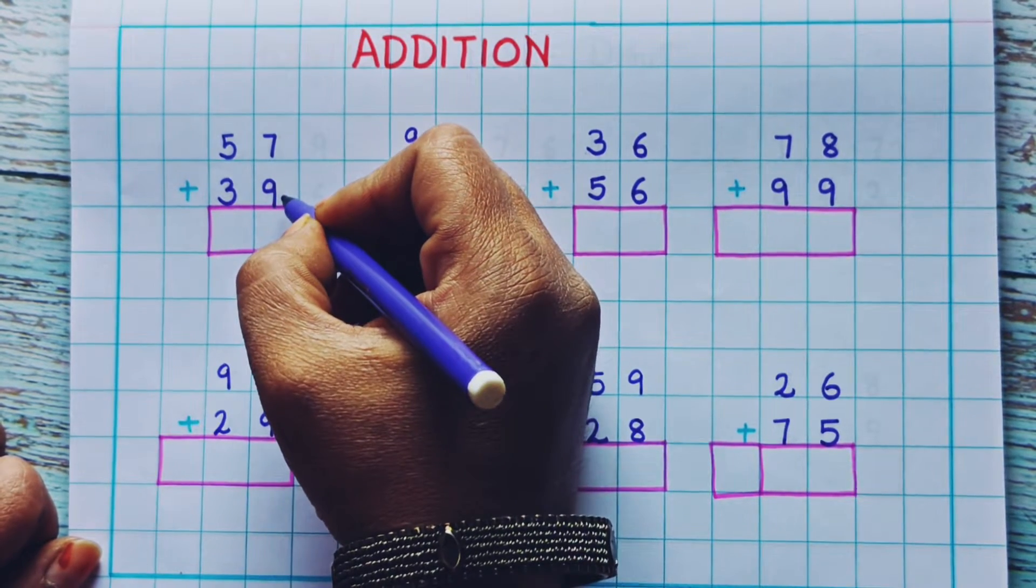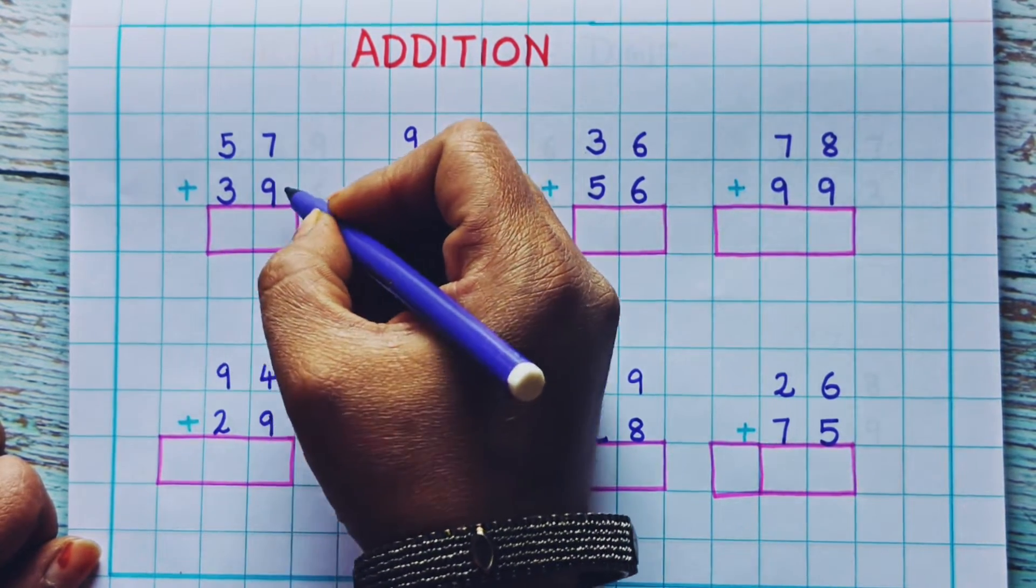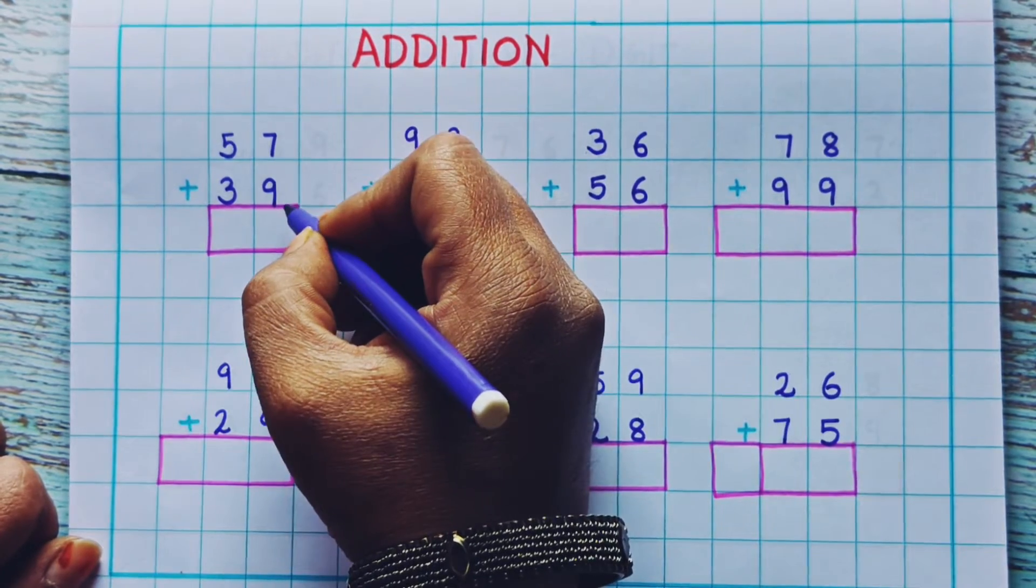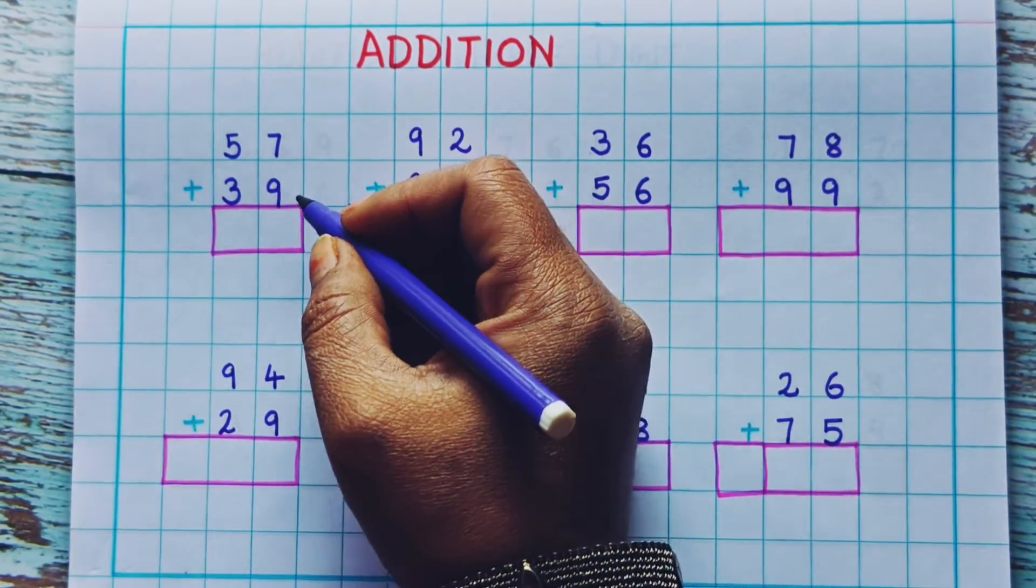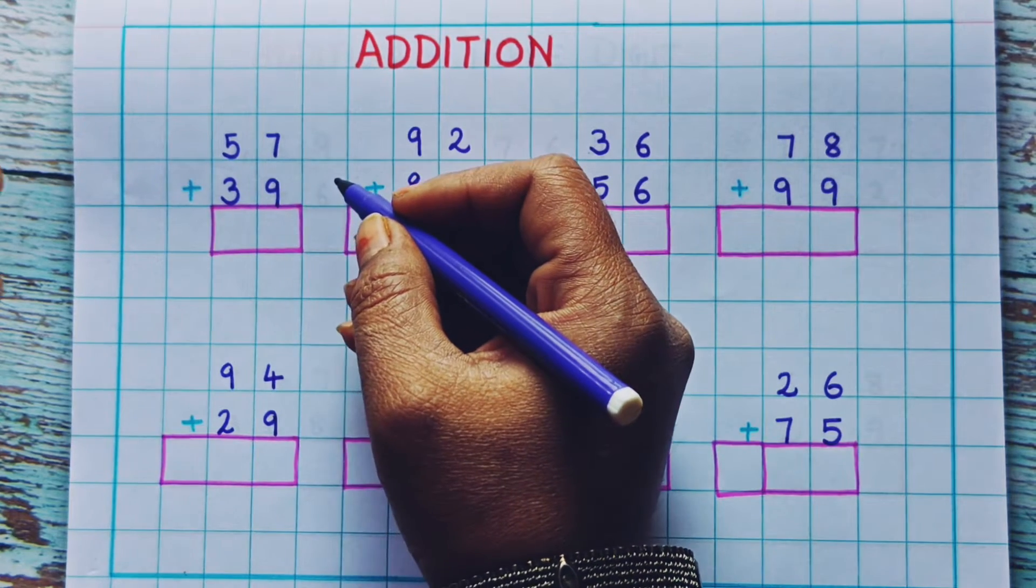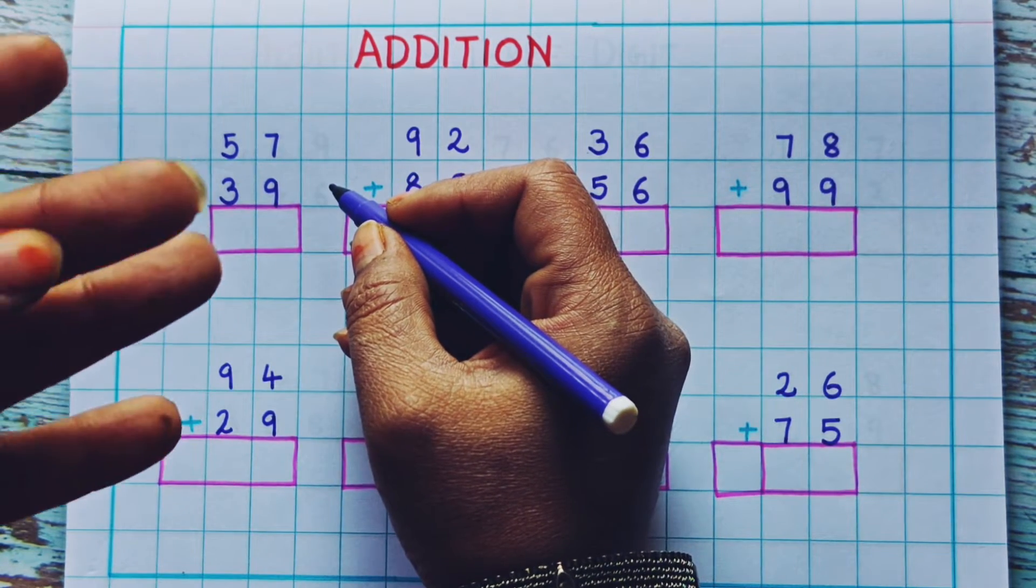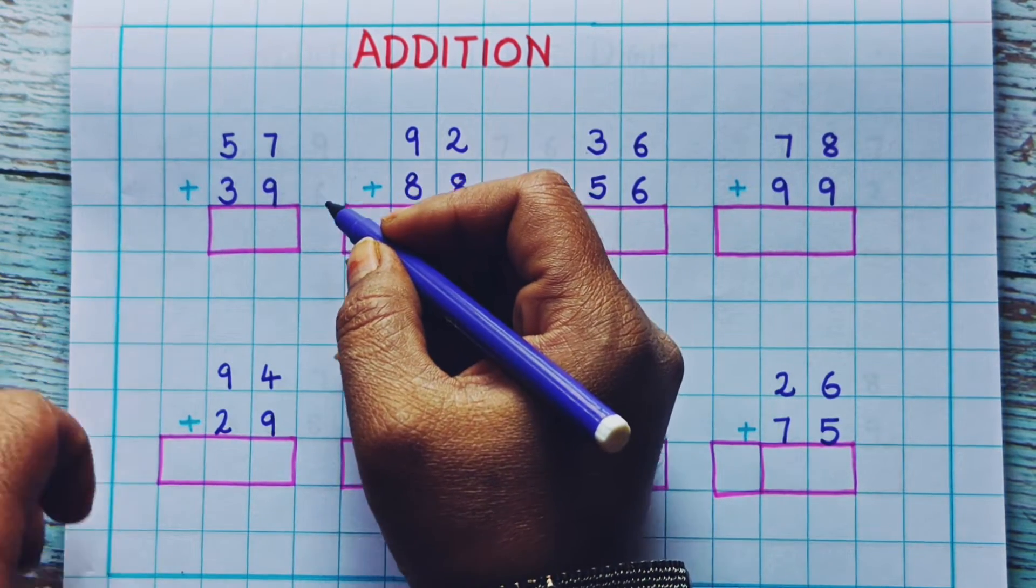7 plus 9. How can we do it easily? Keep 9, the bigger number, in your mind and then add the other number to it. So 9 plus 7: 10, 11, 12, 13, 14, 15, 16.